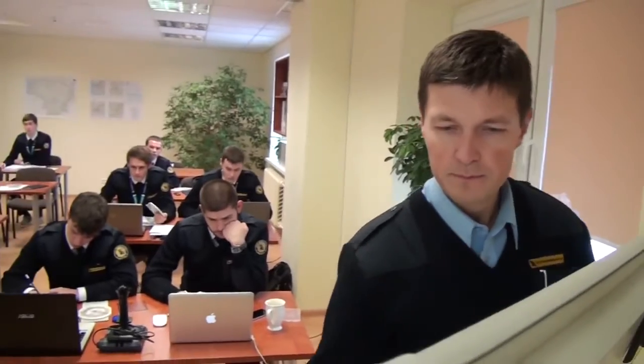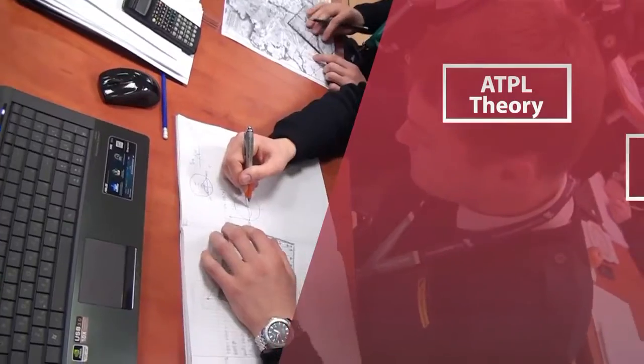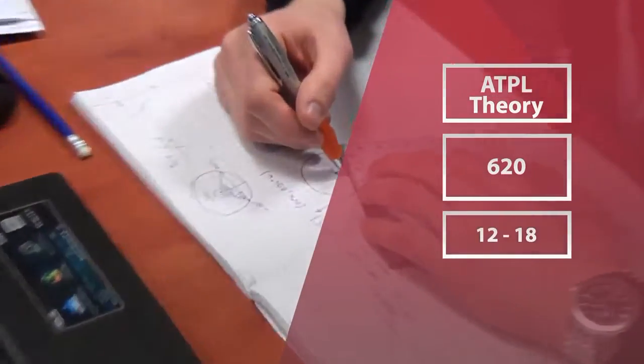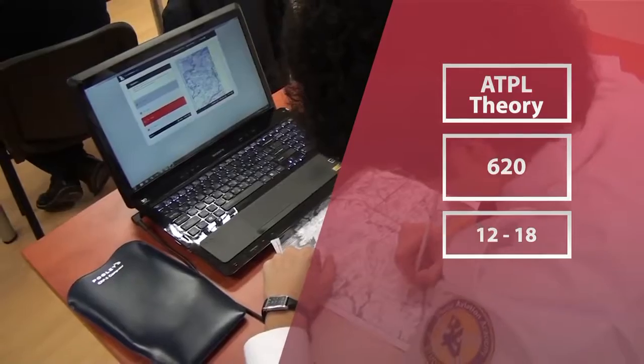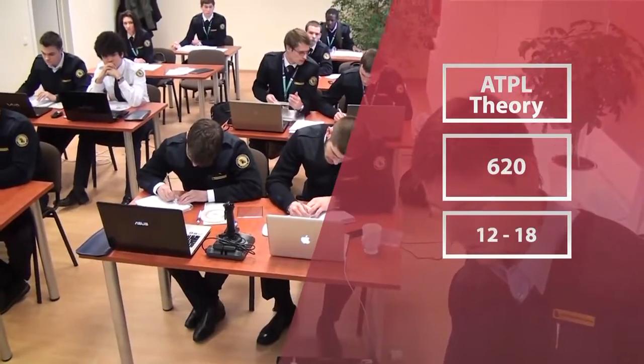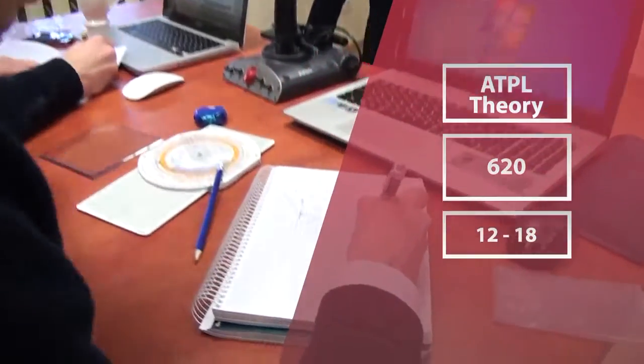Once the visual training is done, the second part of the theoretical training begins. This part of the course consists of 620 hours, divided into 13 subjects, that includes study time in the classrooms, professional instructions, and computer-based training, that is called CBT.